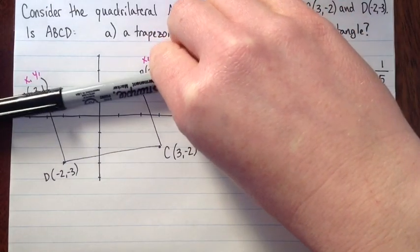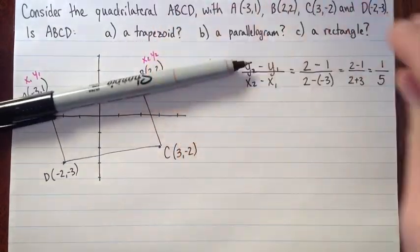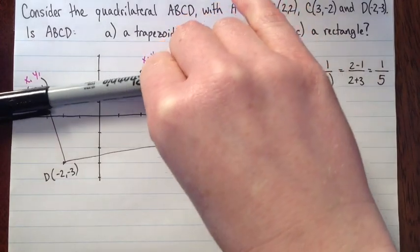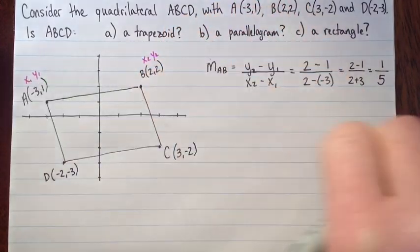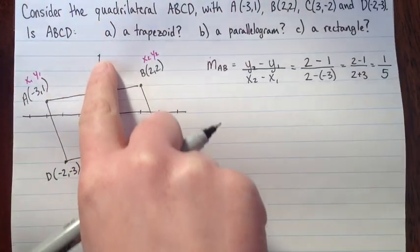So the slope of AB is 1/5. That makes sense. It's a positive slope that goes up and to the right. It also looks pretty flat, close to 0, so 1/5 is pretty small. That's quite a reasonable answer.